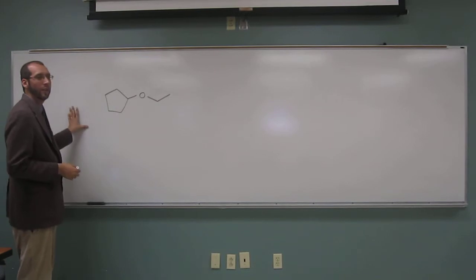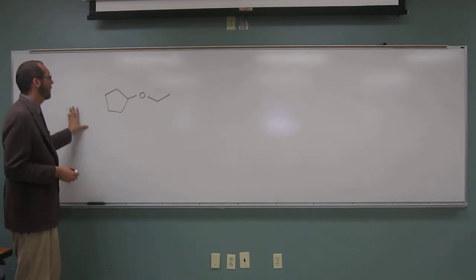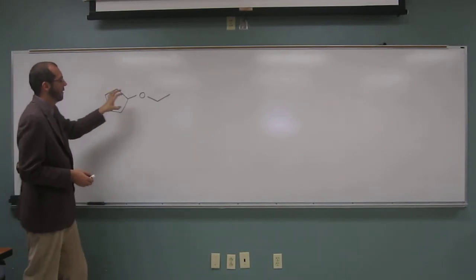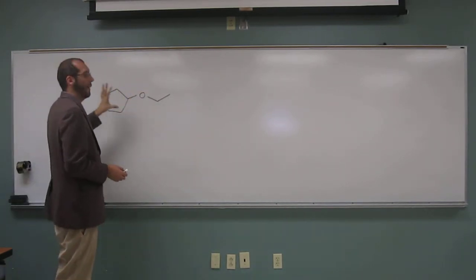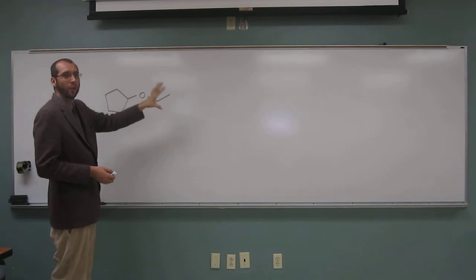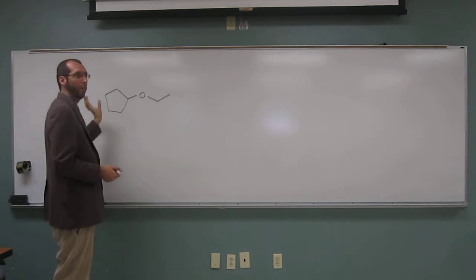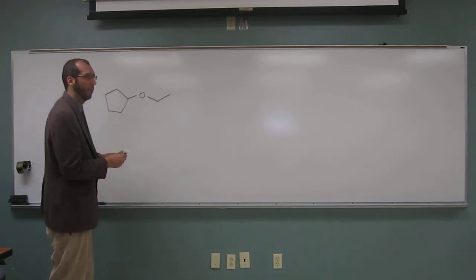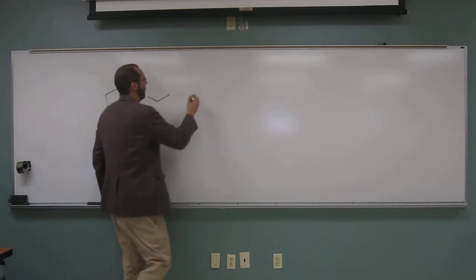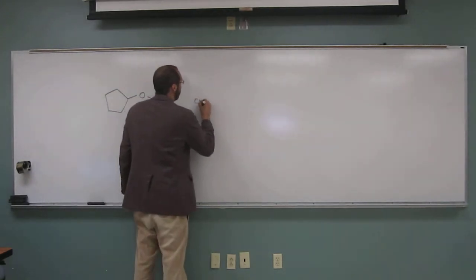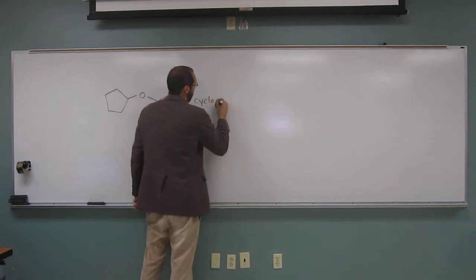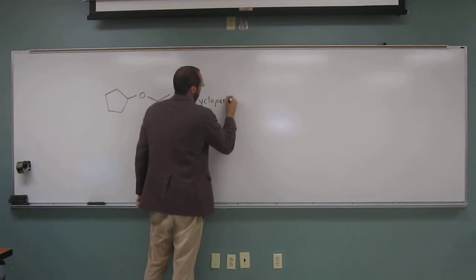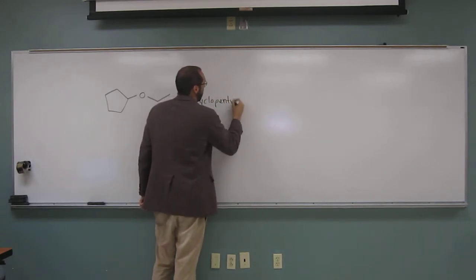So the way we do these simple ethers, remember, is we just see that it's an ether and then we take the two groups and we put them out for that. So cyclopentyl ethyl ether.